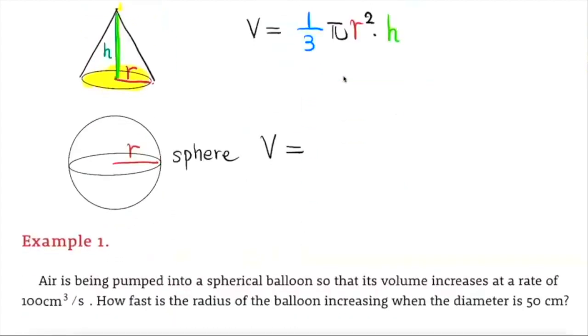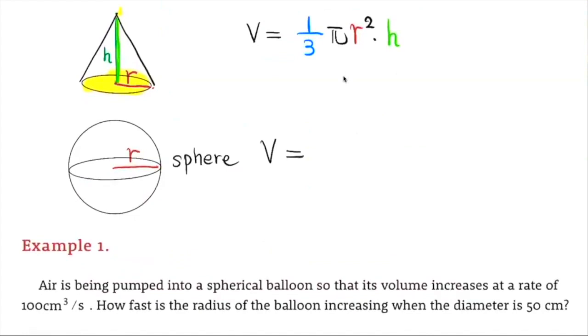The last one over here is going to be the volume for a sphere. So this is a sphere with radius R. The volume turns out to be π R³ but times 4/3.